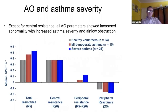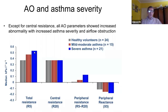What's the relationship between asthma severity and airway oscillometry measures? This is a study that we published with Peter Williamson, who now works in Perth, nine years ago. We compared healthy volunteers in grey, mild to moderate asthma in red, and severe asthma in blue. As you go from normal to mild to moderate and severe, you get a proportional increase in total airway resistance when you look at central airway resistance at 20 hertz.